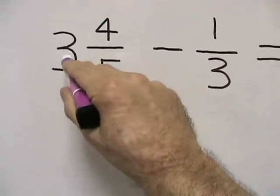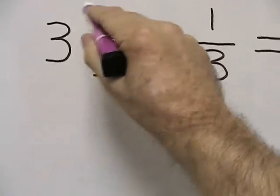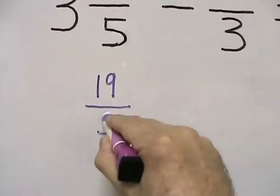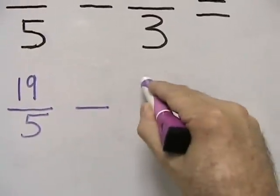We take our denominator, multiply it by our whole number to get 15. Add our numerator to get 19 fifths. We subtract 1 third.